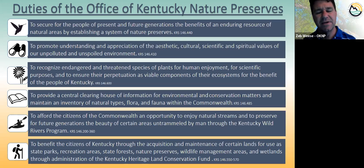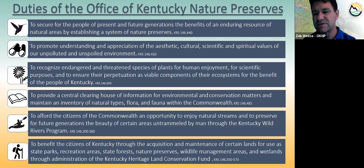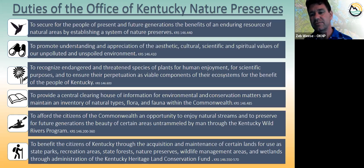I've been responsible for merging all those programs together and getting them to work as opposed to being parallel programs. The reason they were parallel is that all of them really involved buying land for endangered species or habitat conservation purposes and managing it. Nature Preserves had about 15 people, Wild Rivers had one, Heritage Lands had two - so that's 18 people. We've since grown the program to about 30 people, mostly through grants and competitive funding.